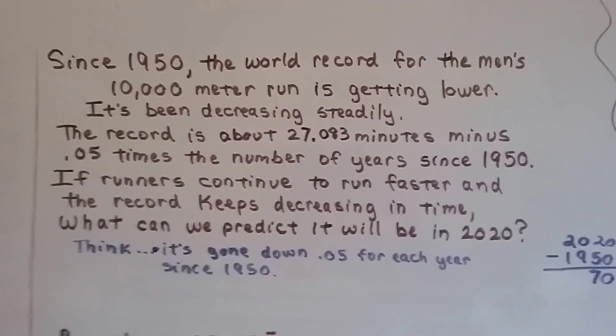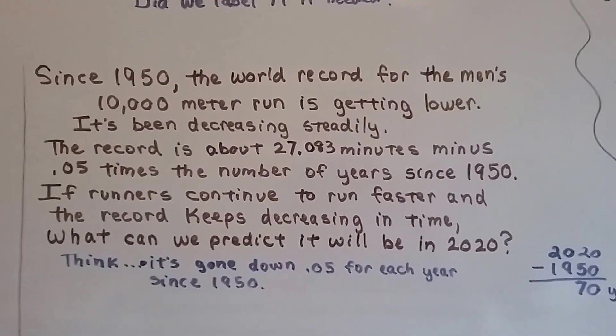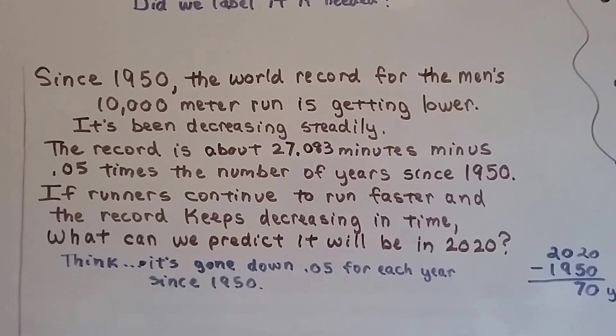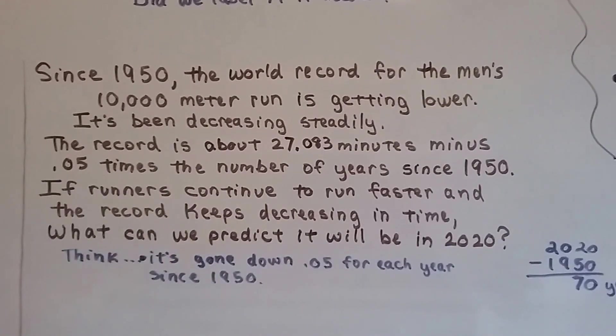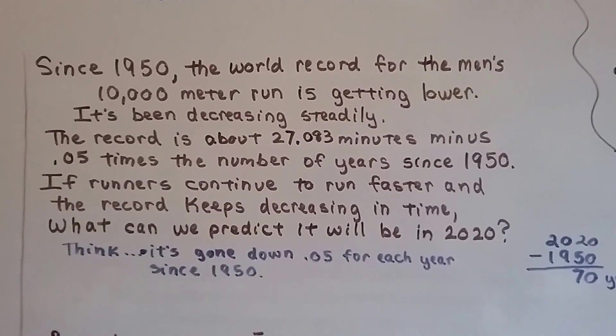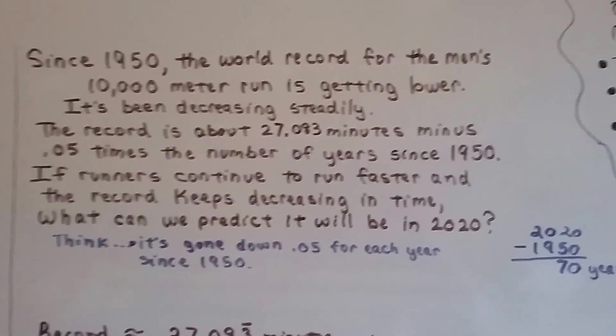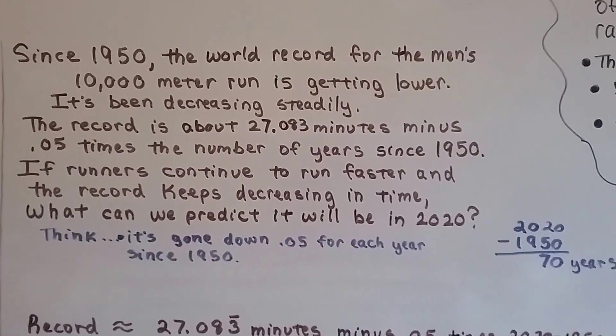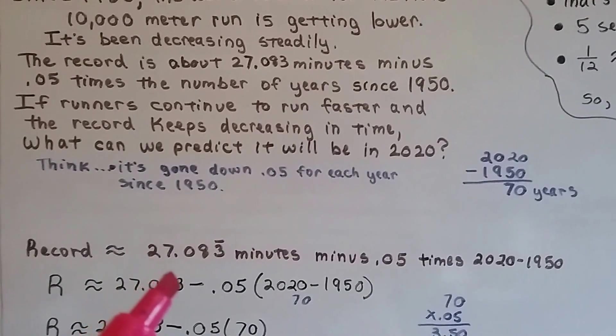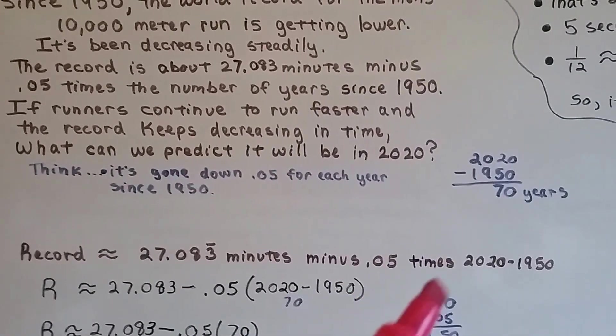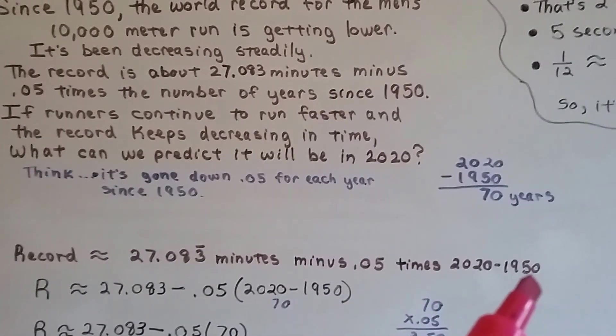Since 1950, the world record for the men's 10,000 meter run is getting lower. It's been decreasing steadily. And the record is about 27.083 minutes minus .05 times the number of years since 1950. If runners continue to run faster and the record keeps decreasing in time, what can we predict it will be in the year 2020? So, we think, it's gone down .05 for each year since 1950. So, we need to write an equation. The record is approximately 27.83 minutes minus .05 times the year 2020 minus 1950.